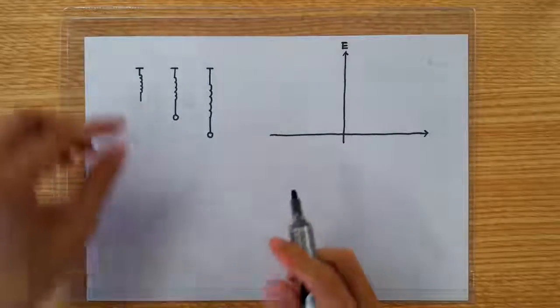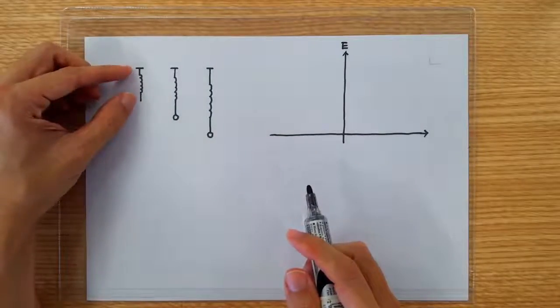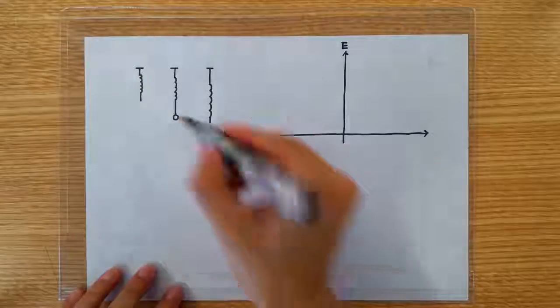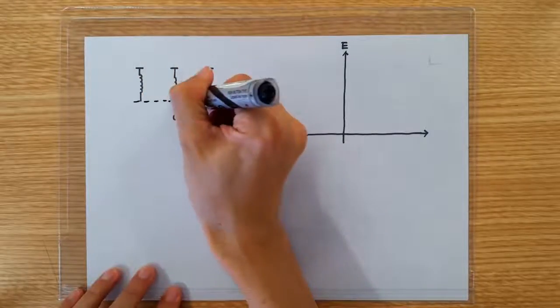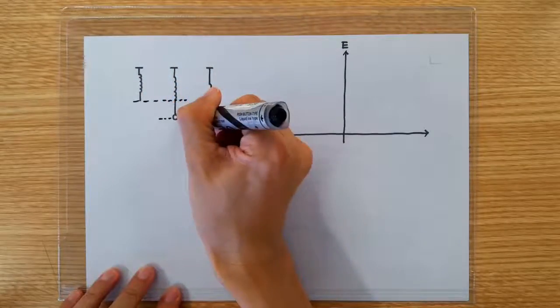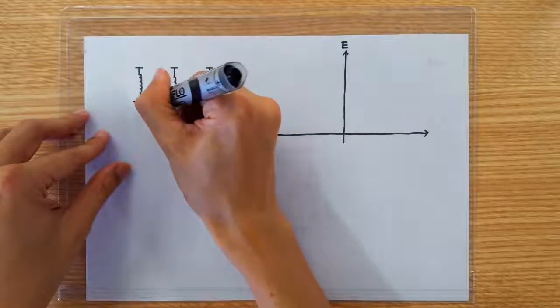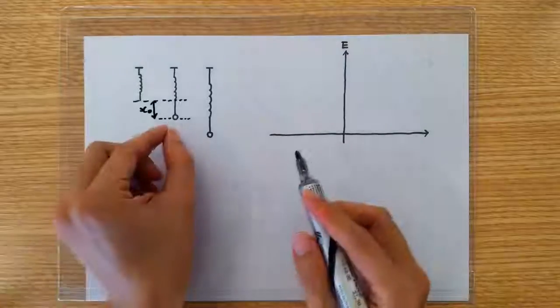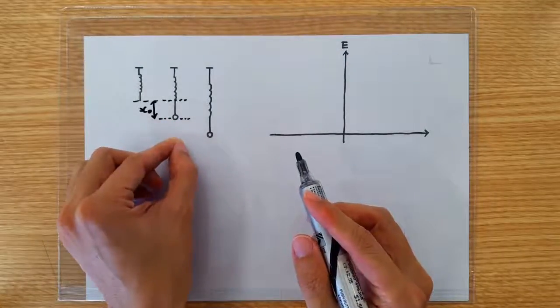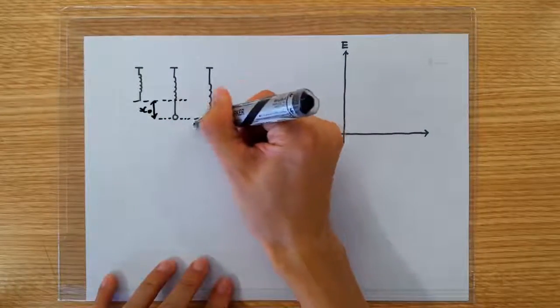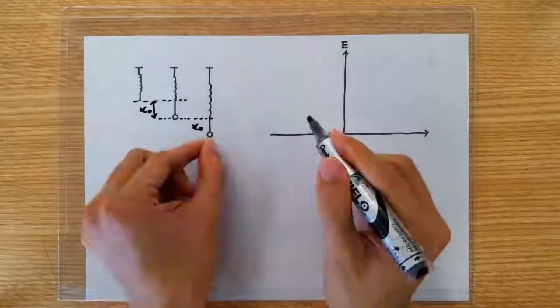Hi, we have here a spring, originally this long, and with a mass hanging on it, it comes to equilibrium at an extension of x0. Now let's stretch it further by an amount of x0 and we let go of it.